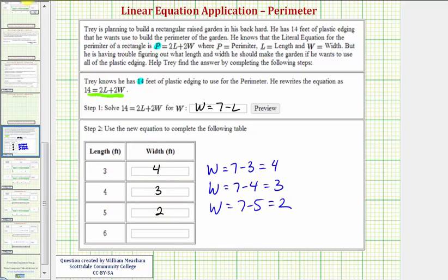And then finally when the length is 6 feet, L is 6. So we have W equals 7 minus 6, which equals 1. So if the length is 6 feet, the width must be 1 foot. Again, if all 14 feet of the edging is used. Okay, that's it for this question. I hope you found this helpful. Thank you.